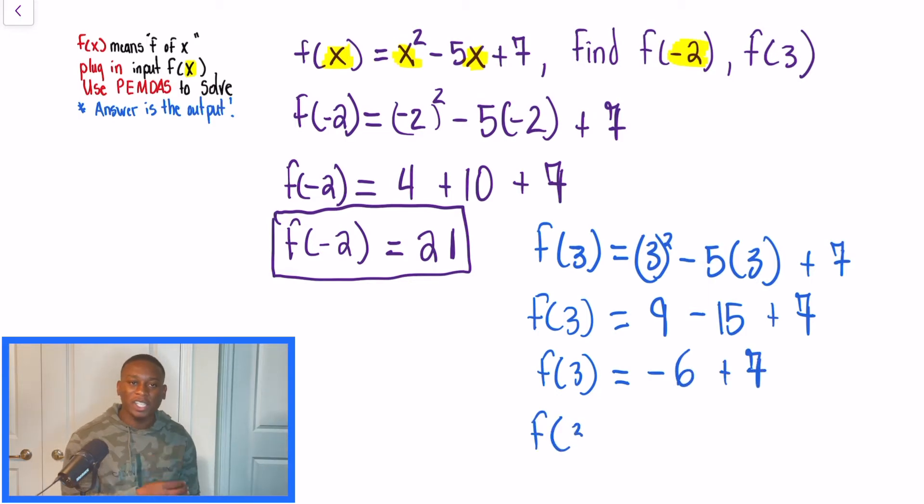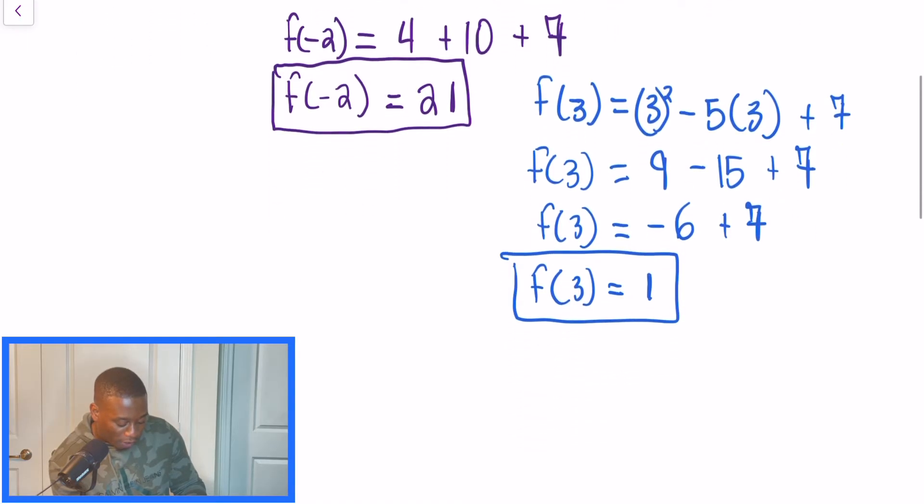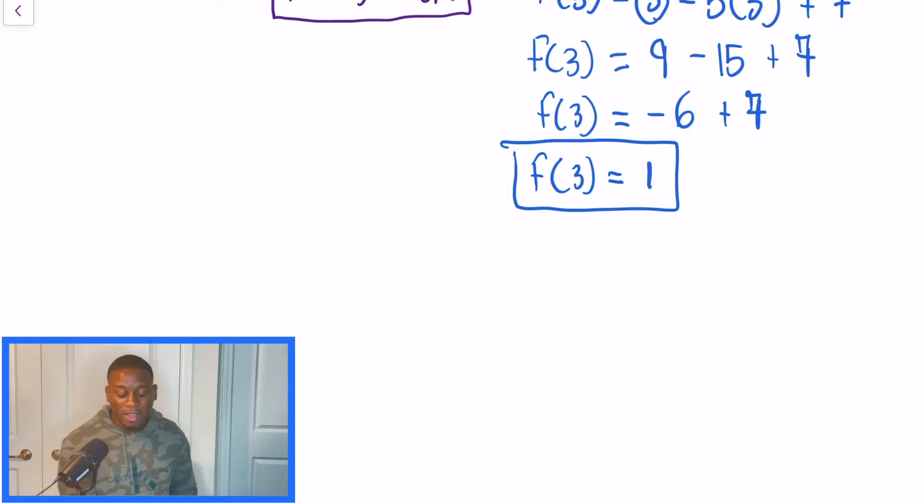And that's all that's happening. Each input that we put into this function is going to spit out an output. And this is typically what functions are. We're going to look at one more problem, and then we'll wrap it up. So in our second problem, we have f of x is equal to, and then this one is also 2. So let's write this function out: 2x squared plus 4x minus 9. Same concept, just different steps.